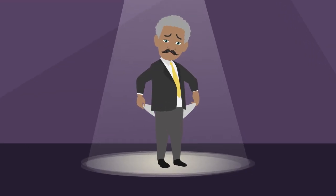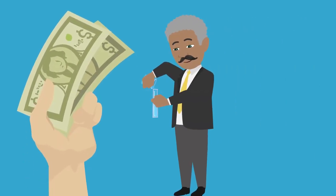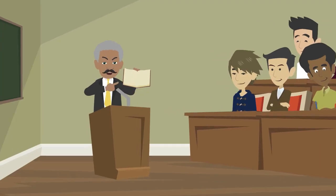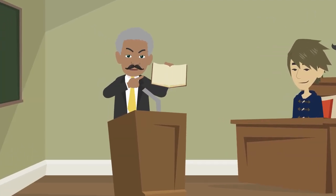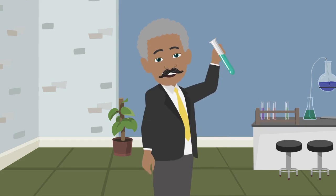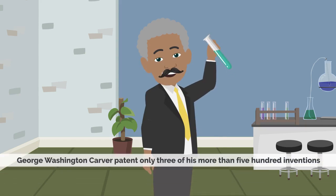George Washington Carver knew what it was to be poor. He could have made a lot of money by patenting his inventions, but sharing and imparting knowledge were more important to him than making money. Carver patented only three of his more than 500 inventions.